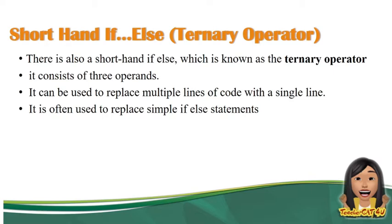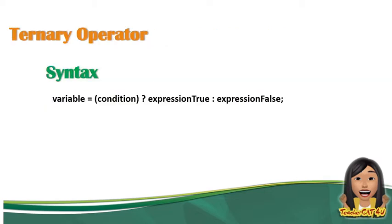Lagi nating tatandaan, simple if-else lang siya. Ito yung syntax ng ternary operator. We have the variable, equal sign, condition, question mark, expression pag true yung naging condition ninyo, then expression pag naging false yung condition ninyo. Ang tinutukoy dito sa expression true tsaka expression false, yan yung magiging equivalent. For example, yung condition nyo dito nag-false, ito yung magiging, ito yung gagawin niya. Kapag ang condition nyo dito nag-true, ito naman ang gagawin niya.